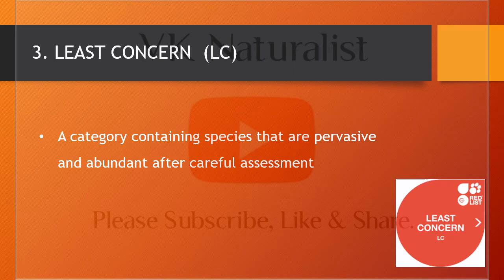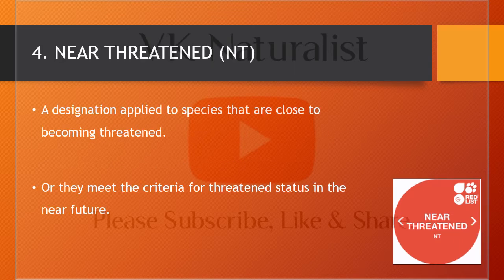Number three is Least Concern, or LC. This category includes species which are abundant and persistent after careful assessment. Number four is Near Threatened, or NT — a designation applied to species which are close to becoming threatened; in other words, they may meet the criteria for threatened species in the near future.